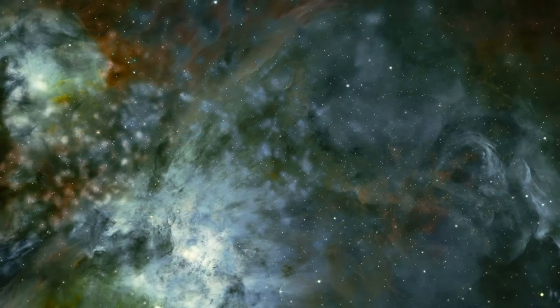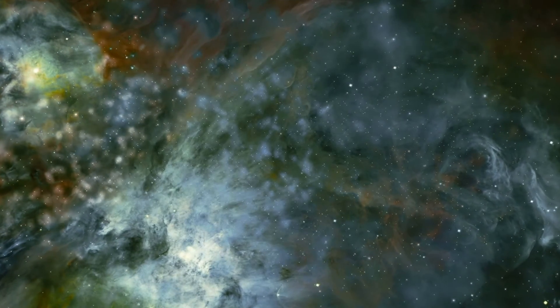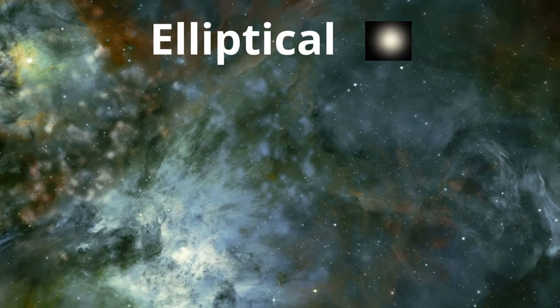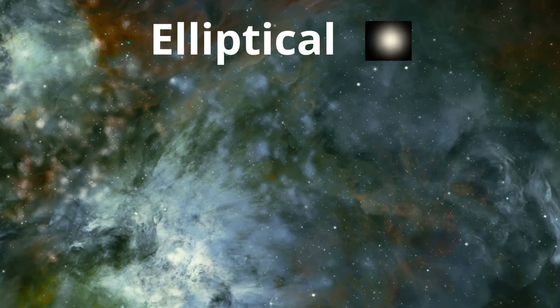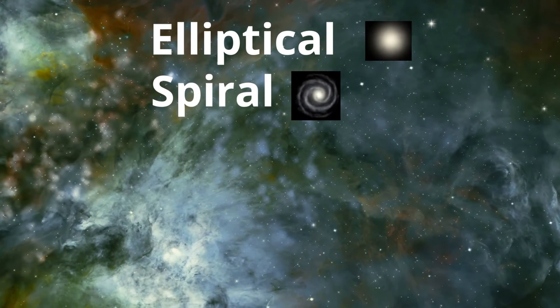There are four main classifications of galaxies. Elliptical galaxies are featureless and spherical in shape. Spiral galaxies have arms that spiral outward.